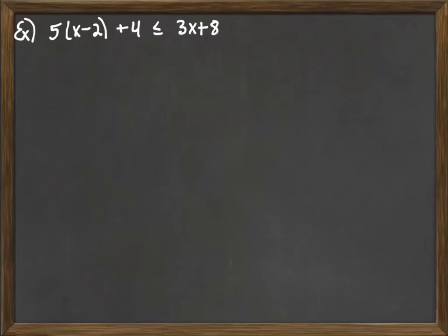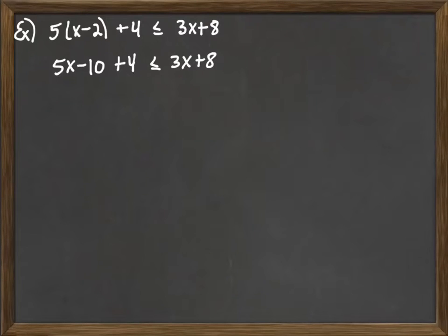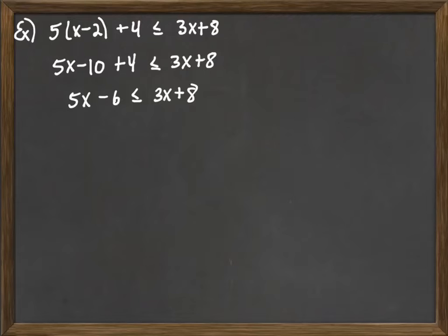Here we can simplify just like in a regular equation. We multiply through by 5: 5 times x is 5x, 5 times 2 is minus 10, plus 4 on the left side, and 3x plus 8 on the other side. We can't really simplify yet, so we keep going. We have negative 10 and positive 4, so we add those together. That gets us to 5x minus 6 less than or equal to 3x plus 8.